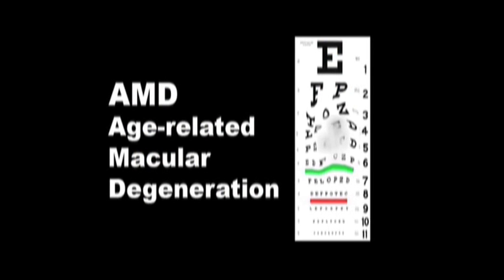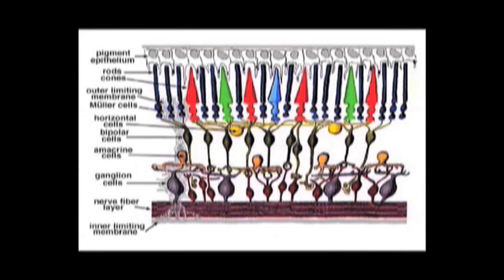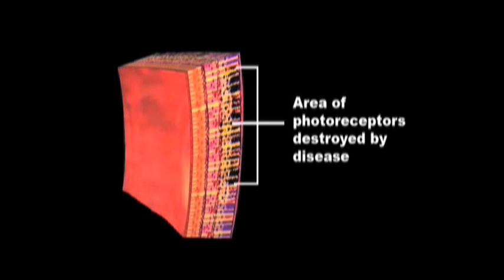Age-related macular degeneration or AMD and retinitis pigmentosa, RP, are blinding diseases that destroy the light sensing photoreceptor cells in the eye but leave the remaining visual system relatively intact.